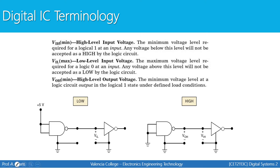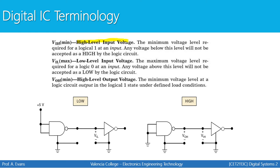One of the parameters we're going to discuss is the high level input voltage. This is the minimum voltage level required for a logical one at an input. For example, if this NAND gate is outputting 0.9 volts and we need at least two volts for the inverter to consider its input high, then the NAND gate is not sending a voltage high enough for the inverter to receive it as a high input.